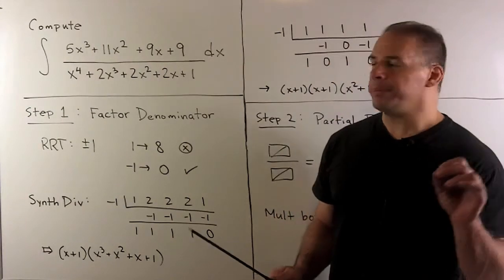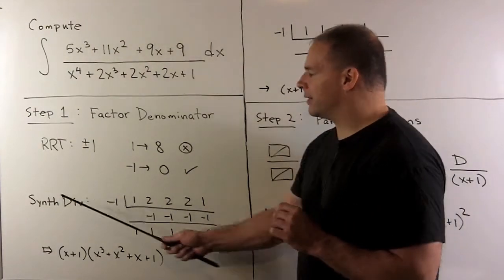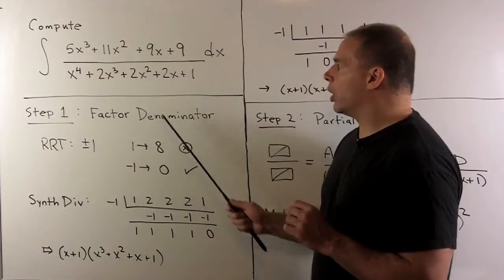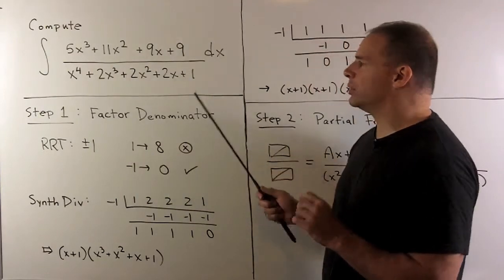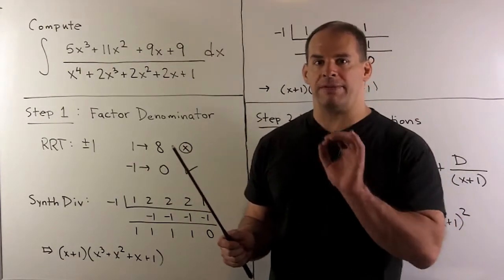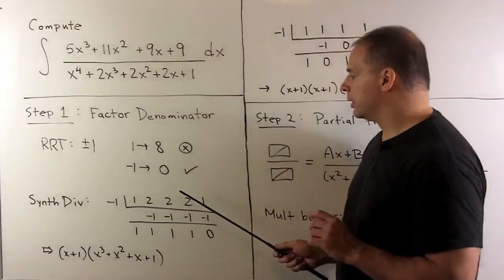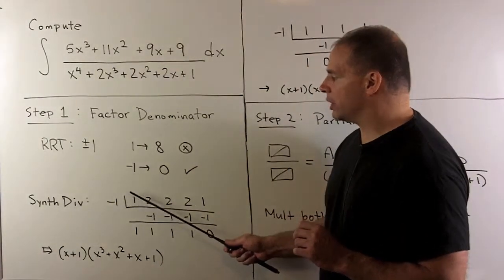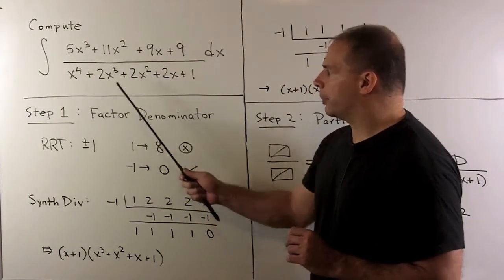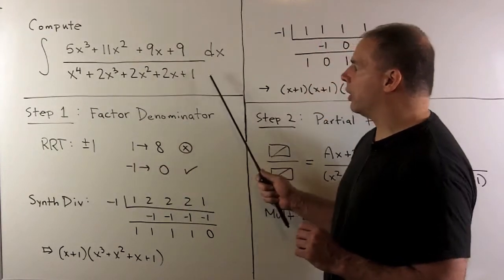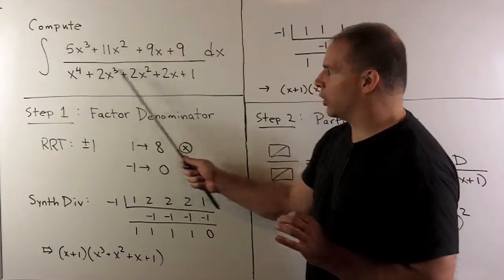To do our factorization, I'm going to use synthetic division. I know x plus 1 divides into here. We just need to figure out what the remaining factor is. For synthetic division, we put our root here. I'm going to put the coefficients of our polynomial in descending order of degree.